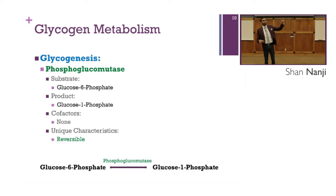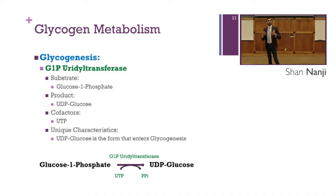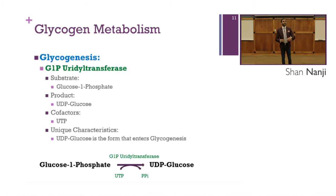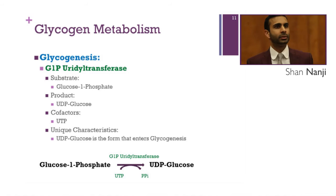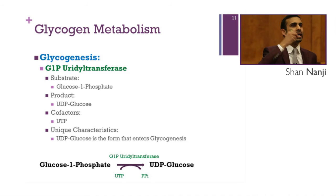Next is G1P uridyl transferase. The substrate is glucose-1-phosphate and the product is UDP-glucose. The cofactor is UTP. The unique characteristic is that UDP-glucose is the form that enters glycogenesis. UDP is always the carrier for one molecule of glucose, while the carrier for multiple glucose molecules is dolichol.